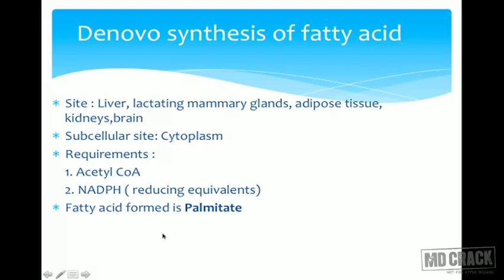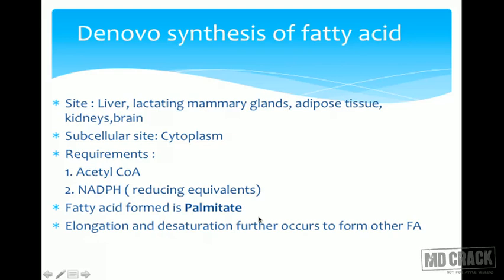By the end of de novo synthesis, the fatty acid that is formed is palmitate — a 16-carbon compound. Elongation and desaturation further occur to form other fatty acids, but by de novo synthesis only palmitic acid is formed. For MCQs: stearic acid, oleic acid, linoleic acid — none of them are formed by de novo synthesis. Only palmitic acid.